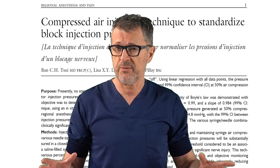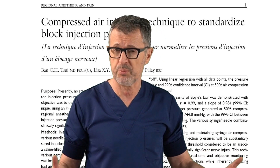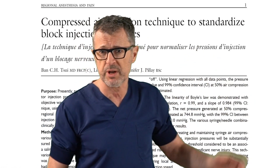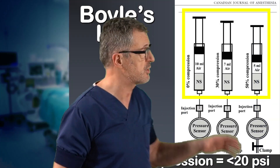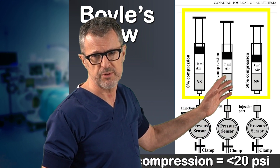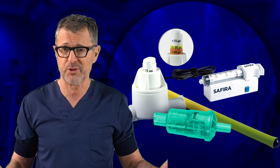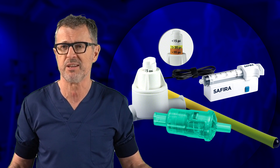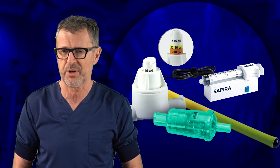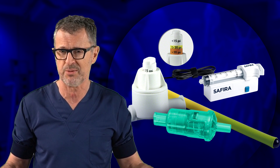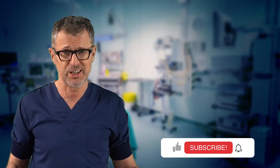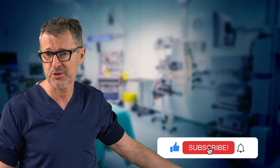In addition to commercially available injection pressure monitors, there is also a compression injection technique to standardize block injection pressures, published by Bansui. This method uses air compression within the syringe to determine when there is too much opening pressure. Injection pressure monitoring has become a standard of care in many institutions, and you can also use air in the syringe so you always know when you exert too much pressure on the plunger. Until next time — if you like our videos, make sure you subscribe.